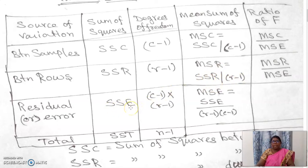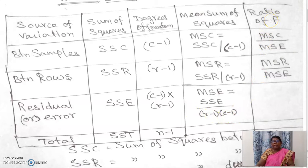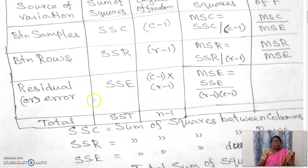Then SSE is the sum of squares due to error, and the degrees of freedom is C minus 1 into R minus 1, where C is the number of columns and R is the number of rows. The mean sum of squares due to error is SSE divided by R minus 1 into C minus 1. Finally, you have to find the F ratio, which is MSC divided by MSE and MSR divided by MSE. After finding these values, you use the F distribution table and compare the calculated value and tabulated value at a particular level of significance.